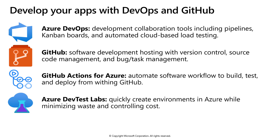GitHub provides access control and several collaboration features such as bug tracking, feature requests, task management, and wikis for every project. GitHub Actions makes it easy to automate all your software workflows, now with world-class CI/CD. Build, test, and deploy your code directly within GitHub. Make code reviews, do branch management, and issue triaging work the way that you want.